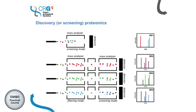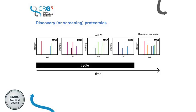We can select not only the most intense but also the second most intense and filter this, obtain the MS2 spectra, deduce the sequence, and do the same for the third, and so on. At the end, what we have in this discovery or shotgun proteomics mode is an MS1 followed by — in this case — three MS2. This would be the top-N, where we have an MS2 for the most intense, an MS2 for the second most intense, and a third MS2 for the third most intense. This is the top three, and then we start again with another MS1. This cycle repeats along the time axis.